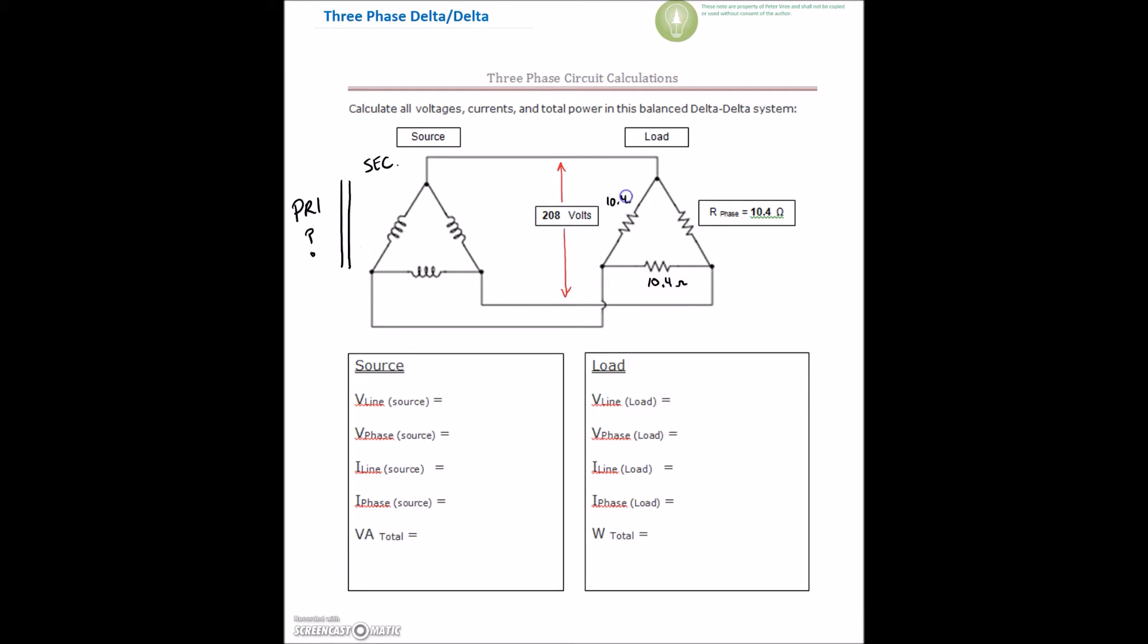So we'll deal with unbalanced loads later on. But each of these resistor values are balanced at 10.4 ohms. Our first step is to look at our voltage here and determine whether this 208 volts is a line voltage or a phase voltage.